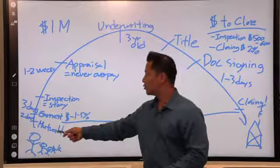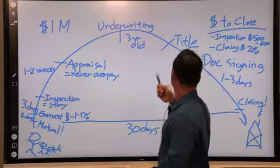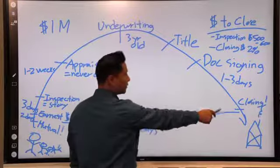So mutual, earnest money, inspection, appraisal, underwriting, title, document signing, and then closing.